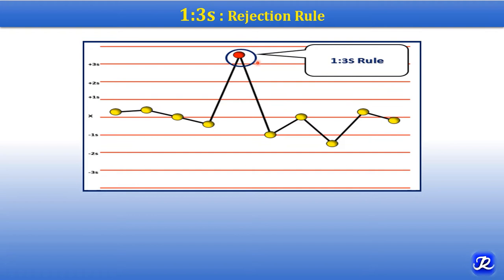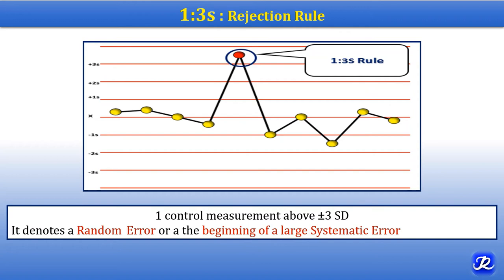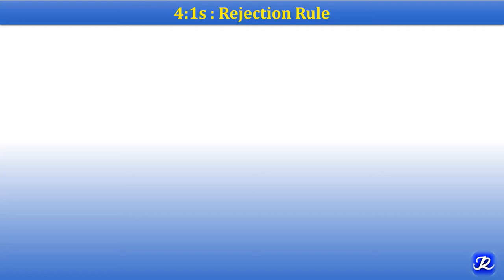In the 1-3S rule, one control measurement exceeds three standard deviations. This indicates random error or the beginning of a large systematic error. The 1-3S rule is a rejection rule.